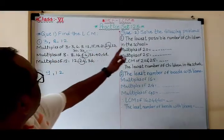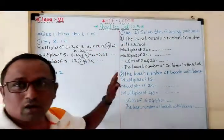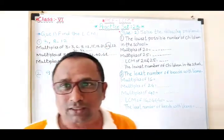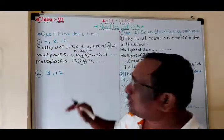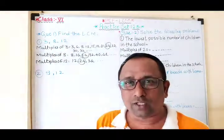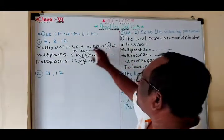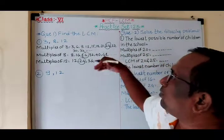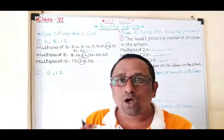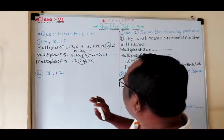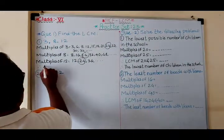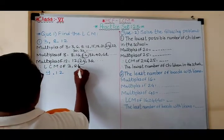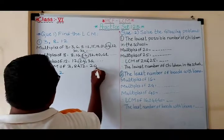You can get more multiples also, but we have to find the lowest — lowest means which comes first. In between the given numbers, whichever you got first, that is the lowest. If you write the multiples of 3, 8, and 12 and write more, then you will get more multiples, but we want the lowest. So the lowest common multiple is 24. Therefore, LCM of 3, 8, and 12 is equal to 24.